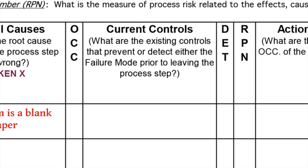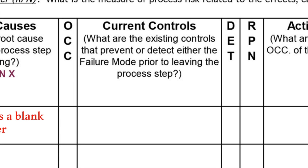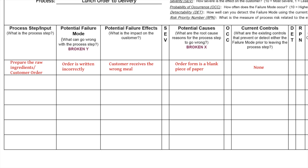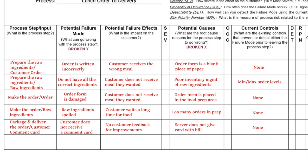For the fifth step of an FMEA, you complete the current controls column. A control is a mechanism that prevents the potential cause of the failure mode from occurring. In our example, there are no current controls for preventing an order from being written incorrectly. A typical question to ask is: what are the existing controls that prevent or detect the failure mode prior to leaving the process step? At this point, you'll repeat steps one through five for every critical and controllable process input.